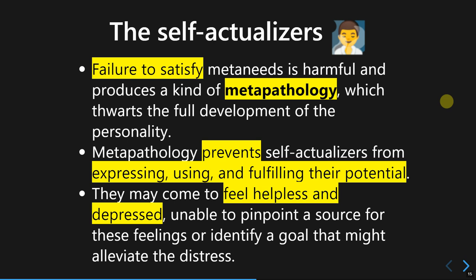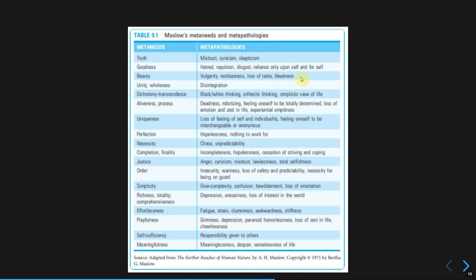In meta-pathology, the person may not even be able to pinpoint the source of their depressed feeling. Maslow presented a table listing the meta-needs alongside the corresponding meta-pathologies. For example, if a self-actualizer has a need for perfection and cannot fulfill it, they will feel hopeless or feel there is nothing to work for. This meta-pathology condition prevents them from maximizing and fulfilling their potential.